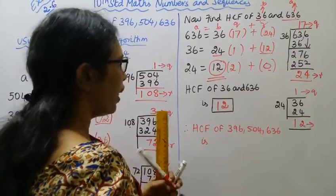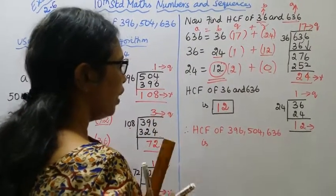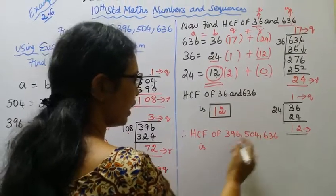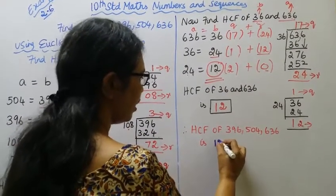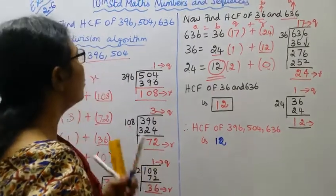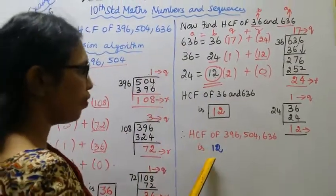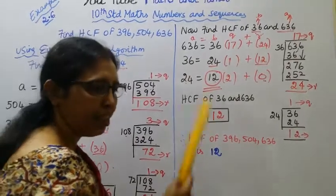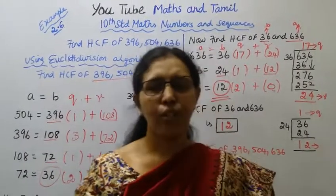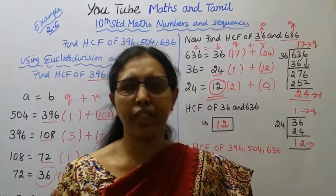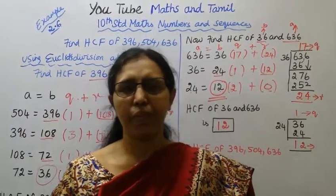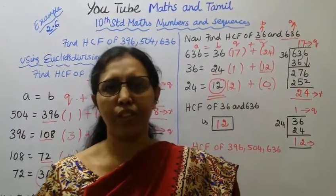So HCF of 396, 504, and 636 is 12. This is the answer. If you are subscribed to this channel, click the bell button to get 100 marks.